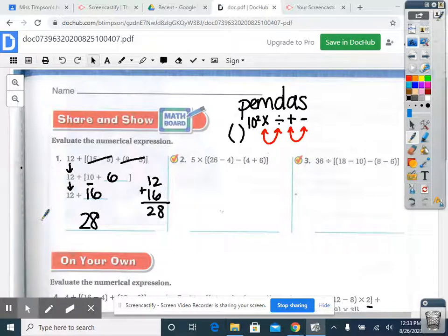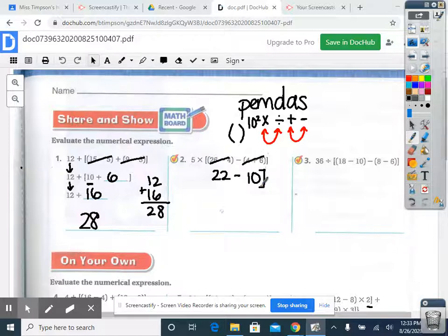Moving on to number two, same thing, parentheses first. So I have two sets of parentheses that are grouped together in one set of brackets. If I solve twenty-six minus four, I get twenty-two. I'm going to fill that in right below that equation. What is four plus six? The answer is ten. I'm going to bring down my subtraction sign because I solved what was in the parentheses. I did not subtract this total minus the second total. I'm going to bring down my brackets. And also, I cannot forget about this five times that was on the outside.